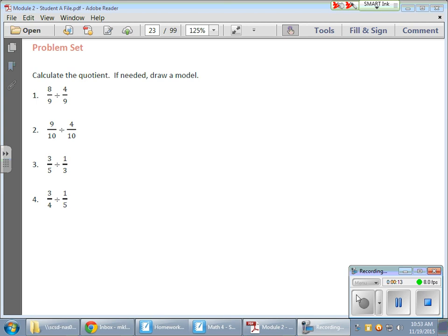We'll notice that in the first problem here, we have like denominators. In other words, the two nines are the denominators, and they are the same. So what we found out the other day or yesterday is that we could just, if the denominators are the same, we can simply take our numerators and divide them. So this becomes sort of an 8 divided by 4 situation. 8 divided by 4 gives me 2.